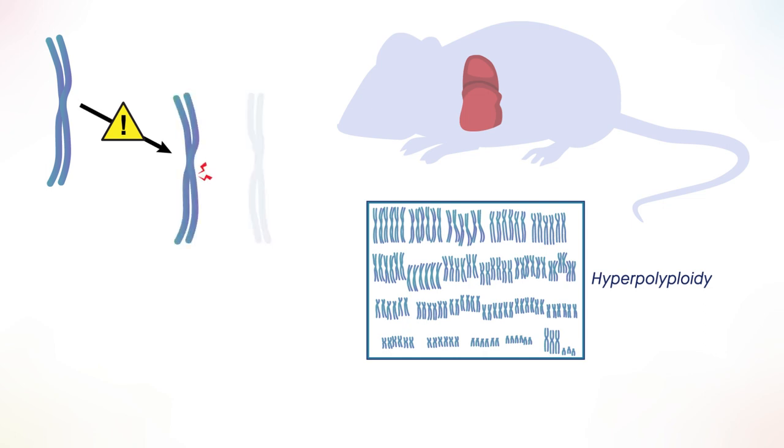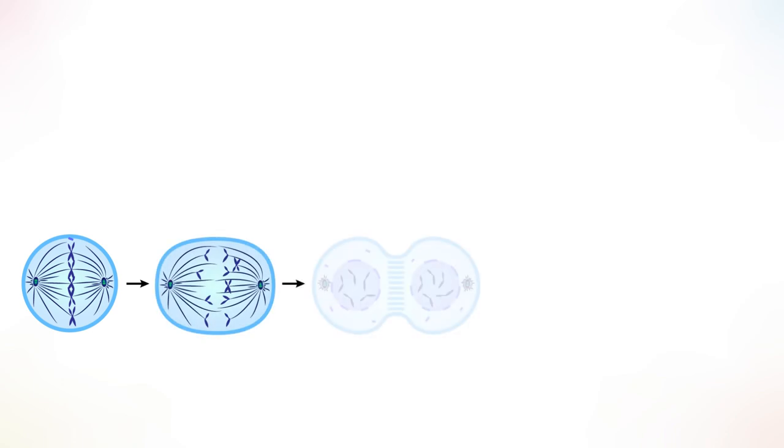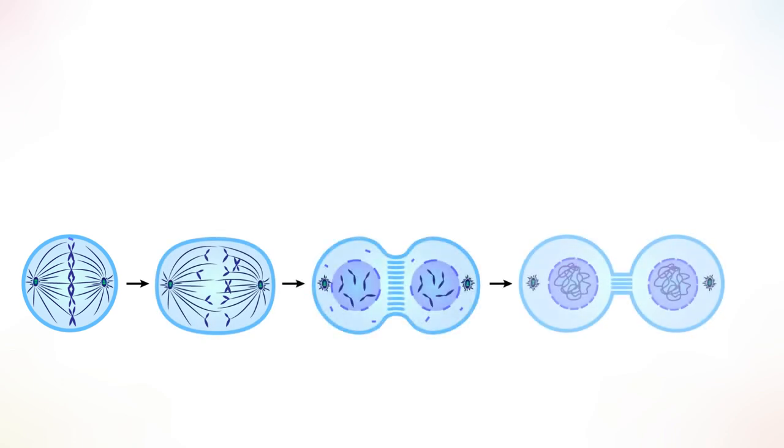In a recent study in mice, researchers found that exposure to genotoxins, substances that cause DNA damage, led to the formation of hyperpolyploid hepatocytes. This occurred due to the failure of liver cells to complete the final step of cell division, where two daughter cells physically separate from one another.